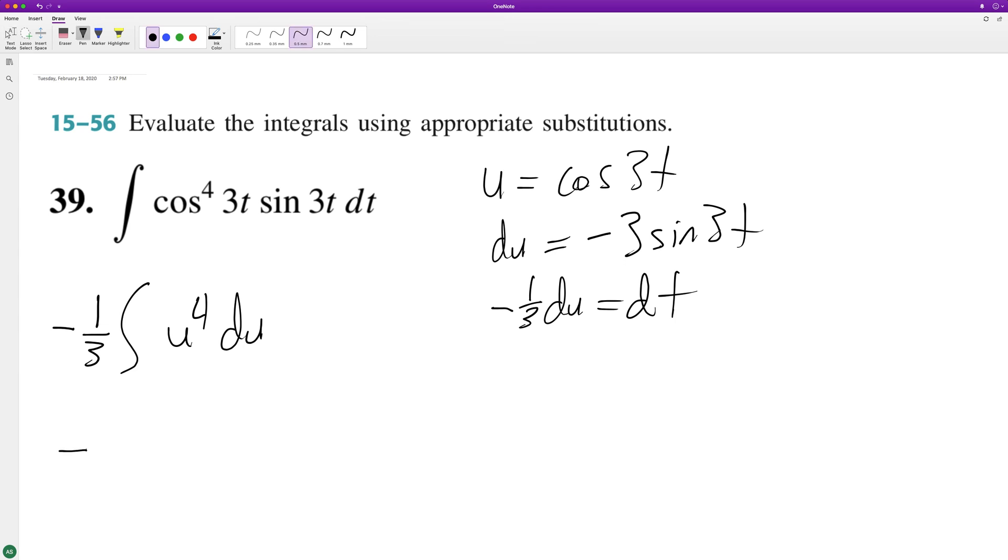So we integrate this, we get negative 1/3rd times u to the 5th over 5 plus c.